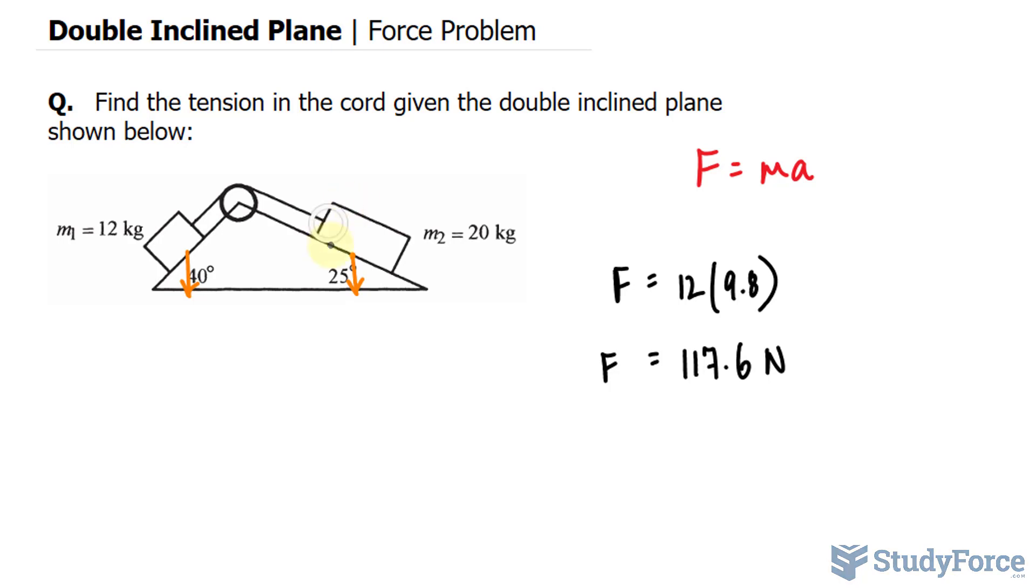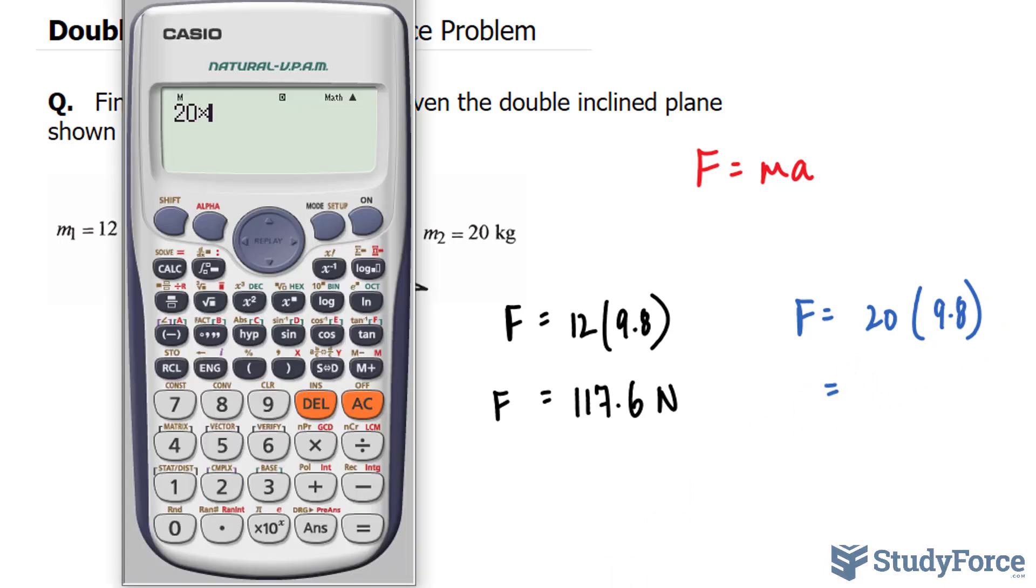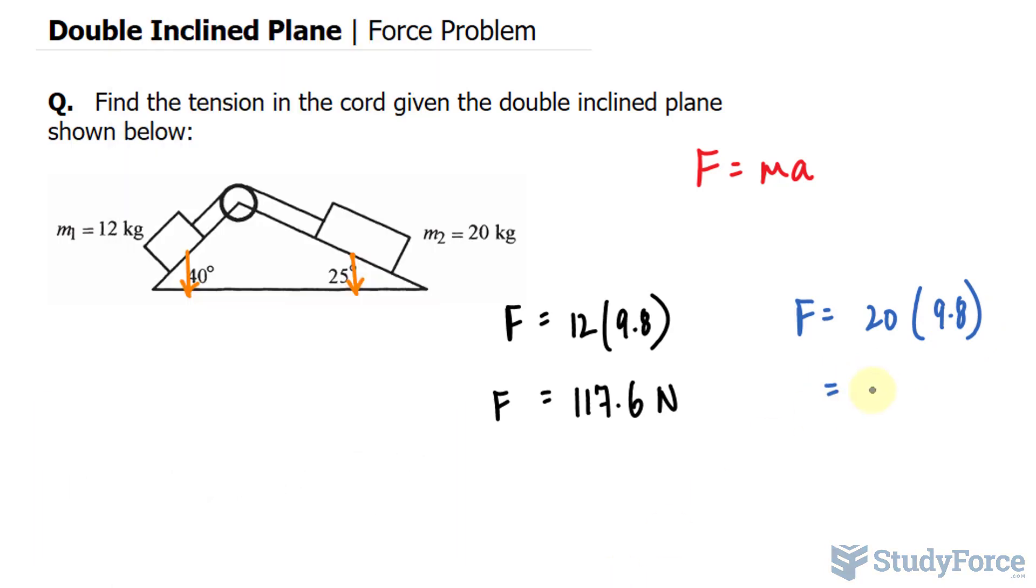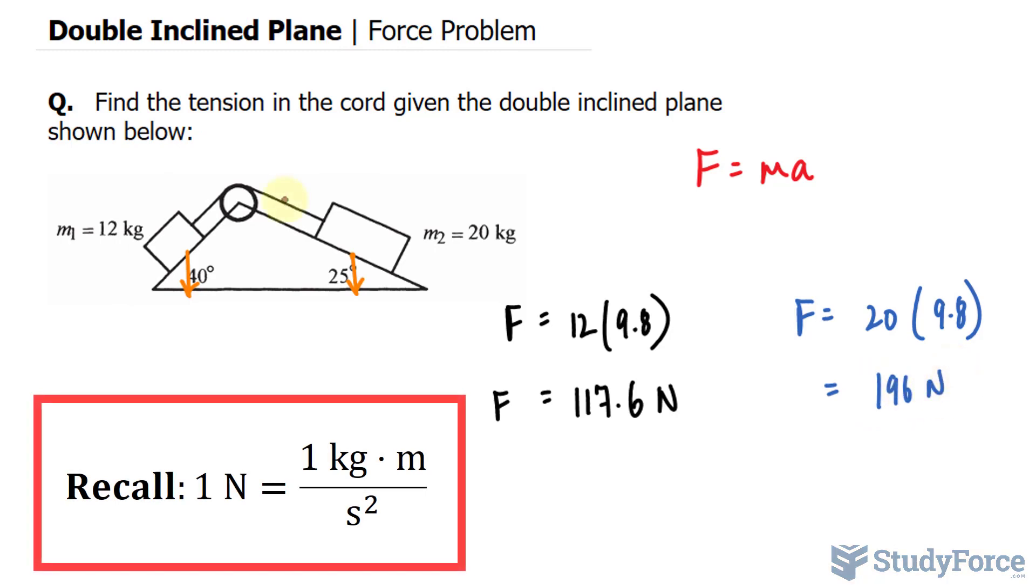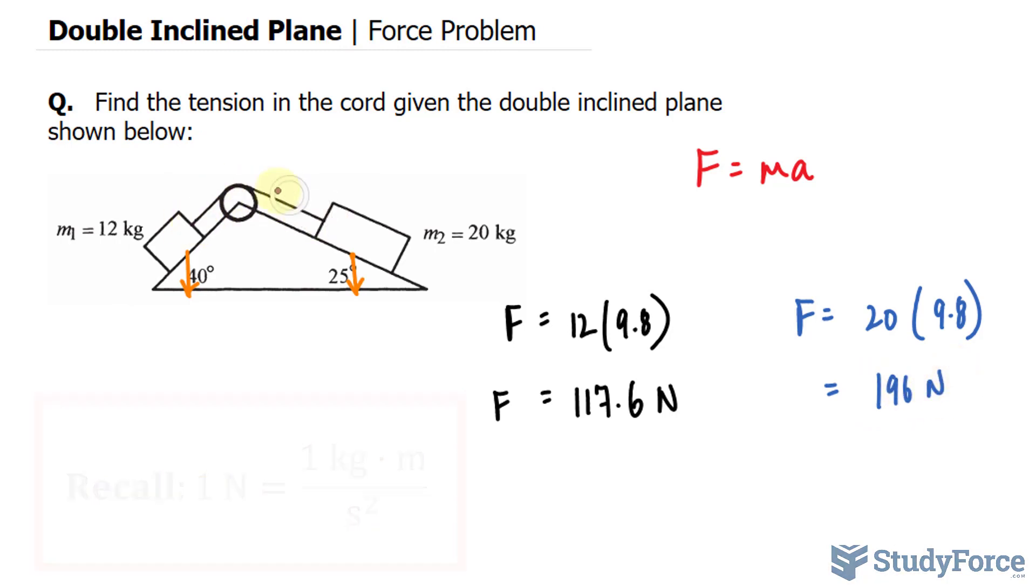Now let me do the same thing for this mass, and I'll show you why this is important later on. This is a very important number to start with. So we have force is equal to 20 kilograms, that's the mass, times 9.8. Again using our calculator, 20 times 9.8 gives us 196 newtons.